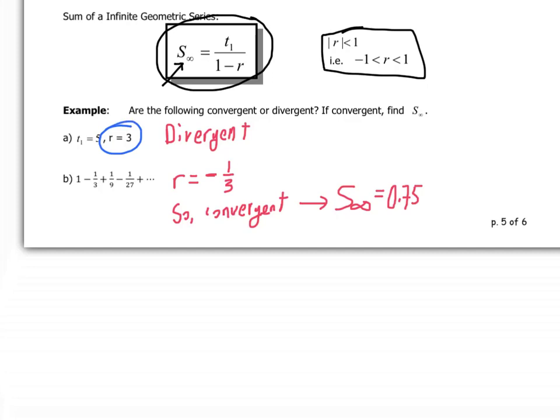In the second series, r is equal to negative a third. And so we could say that this is convergent. And in fact, plugging the formula in, you end up finding that S infinite, or the infinite sum is 0.75. Let's flip to the next page.